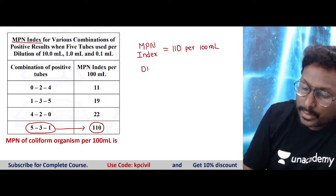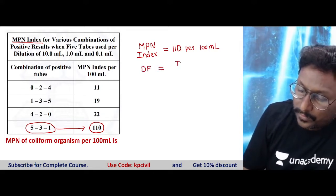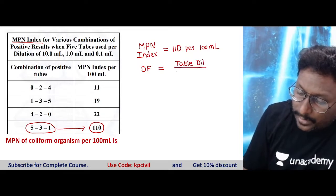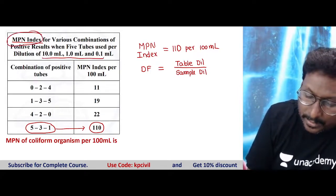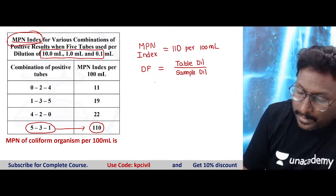Now you need the dilution factor. What is dilution factor? Dilution factor is the ratio of table dilution to sample dilution. What is the table? MPN index table. From the MPN index table, this is the table dilution: 10, 1, 0.1.